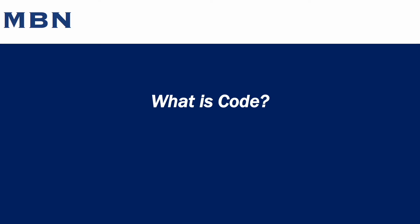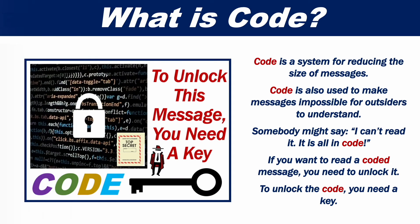What is code? Code is a system for reducing the size of messages. Code is also used to make messages impossible for outsiders to understand. Somebody might say, 'I can't read it, it is all in code.' If you want to read a coded message, you need to unlock it. To unlock the code, you need a key.